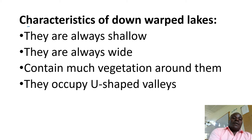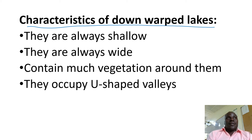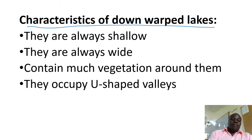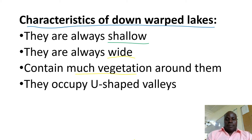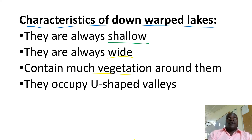Characteristics of downwarped RECs: What shows you that a REC is a downwarped REC? Number one, these RECs are always shallow — they are not very deep compared to Rift Valley RECs. These RECs are always wide and big in size. They don't contain much vegetation growing near them because they don't have steep cliffs, and therefore vegetation grows around them easily. They don't have steep cliffs like Rift Valley RECs.